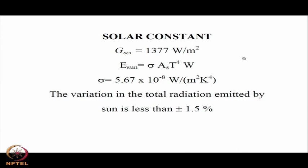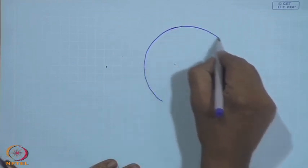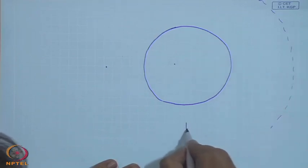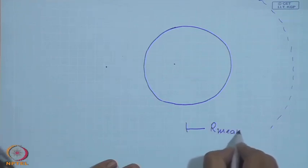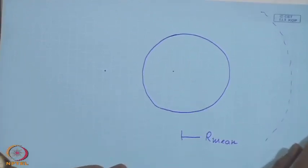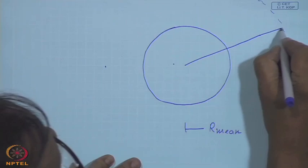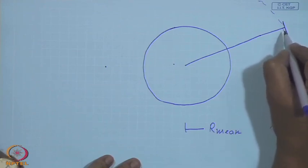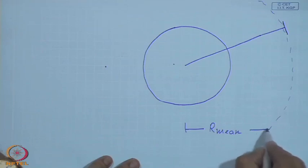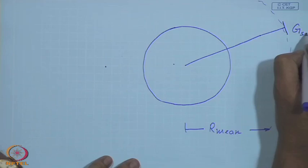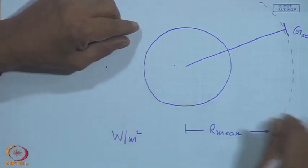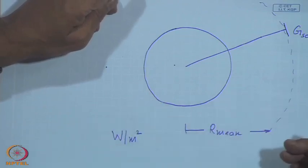We shall define the solar constant. If this is the sun, surrounded by a sphere at the mean distance between the Earth and the sun, and you take any ray and place a surface normal to the sun's ray, the amount of radiation received by a surface of unit area located at one sun-to-Earth mean distance is the solar constant G_SC, in watts per meter square. Multiplying by the total surface area at that radius gives the total emitted solar radiation by the sun.